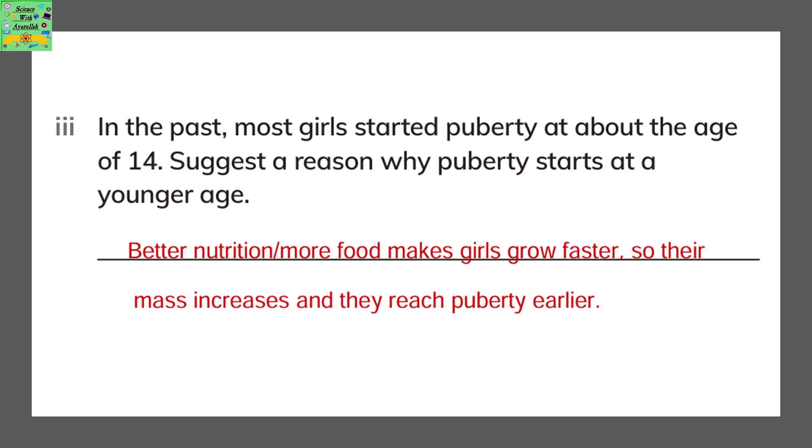In the past, most girls started puberty at the age of 14. Suggest a reason why puberty starts at a younger age today. It is because better nutrition, or more food intake, makes girls grow faster, so their mass increases and they reach puberty earlier.